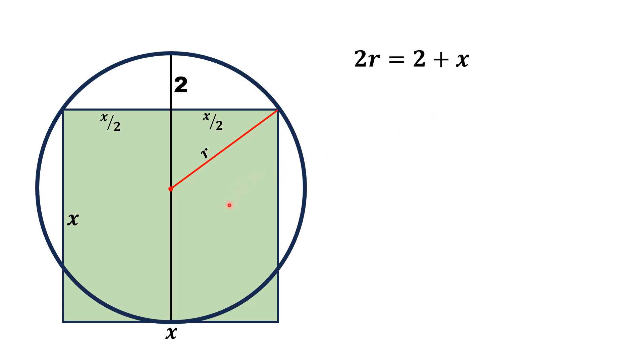Now we modify the figure again. We draw a radial line horizontally and focus on this right triangle. Here we can see that this hypotenuse is r. This length is equal to x/2, and this length is radius r and this is 2 units. So this length is r minus 2, and similarly these two lengths are equal. So here we can write r minus 2.